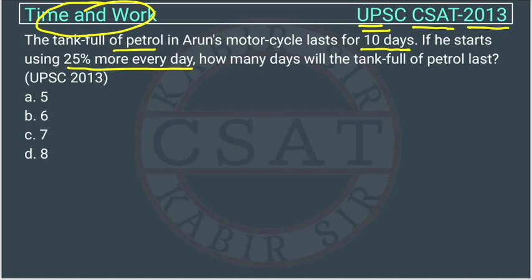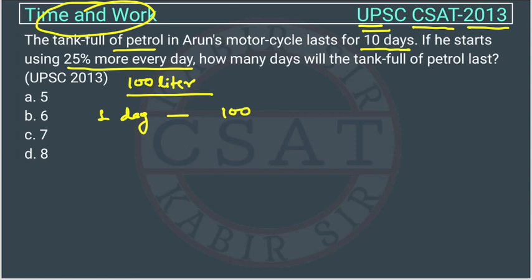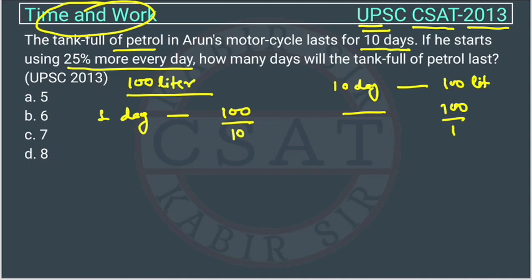We can assume there are 100 liters of petrol in Arun's motorcycle. So if there is 100 liters of petrol, in one day how much is he using? Using the unitary method — in 10 days he consumes 100 liters, so in one day he will consume 100 divided by 10, which is 10 liters.